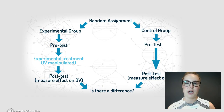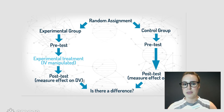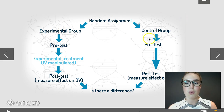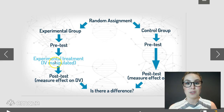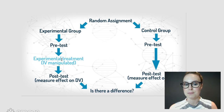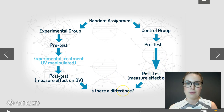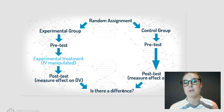Here's a flow chart to visualize what we've spoken about — you might like to pause and copy this down. We start with random assignment, where participants are assigned to either the experimental group or the control group. Both groups undergo a pre-test. The experimental group is then exposed to the independent variable, or experimental treatment, while the control group is not. Both groups then complete a post-test, and the researcher compares the results between the two groups.